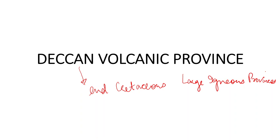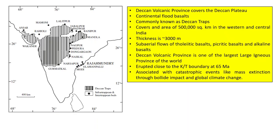The Deccan Volcanic Province covers the maximum area — it covers the entire Deccan Plateau. These are all continental flood basalts: lava flows which have come up by silent eruptions. They are commonly known as Deccan Traps.